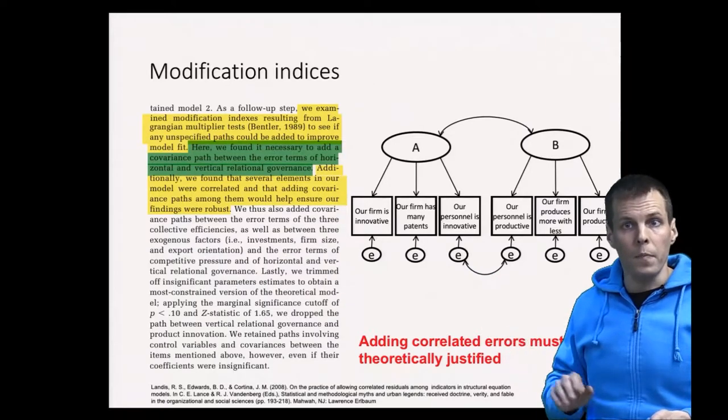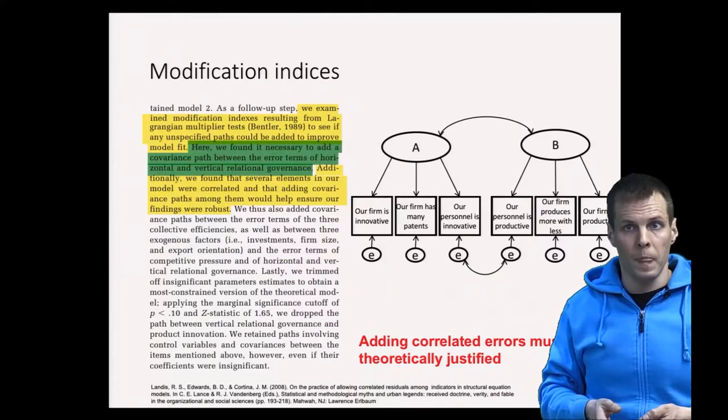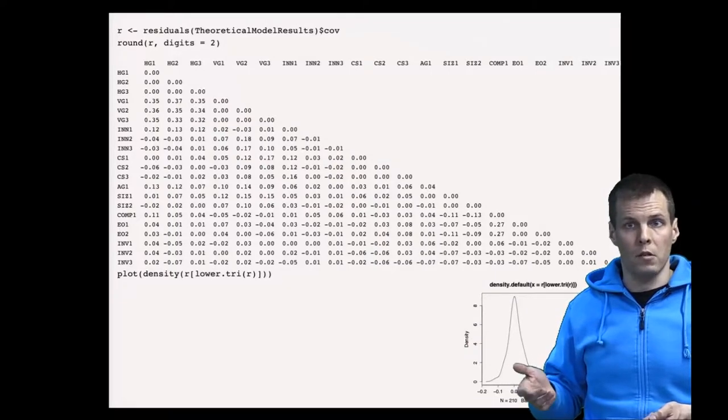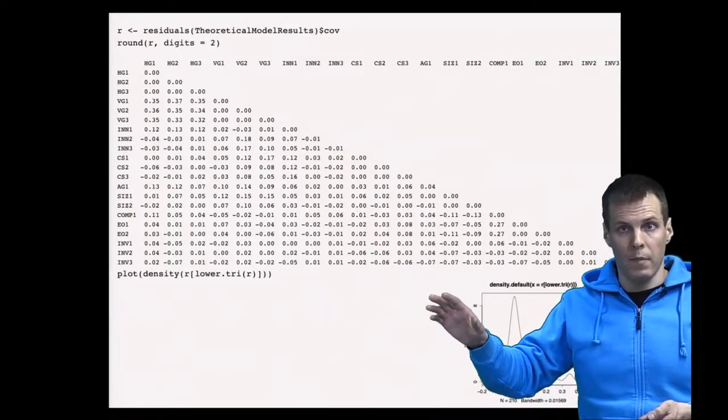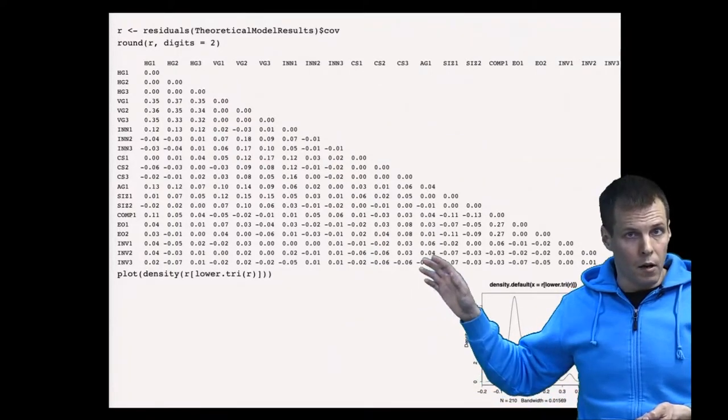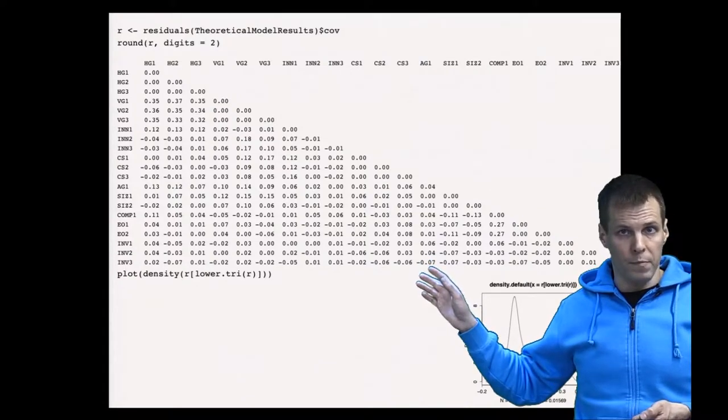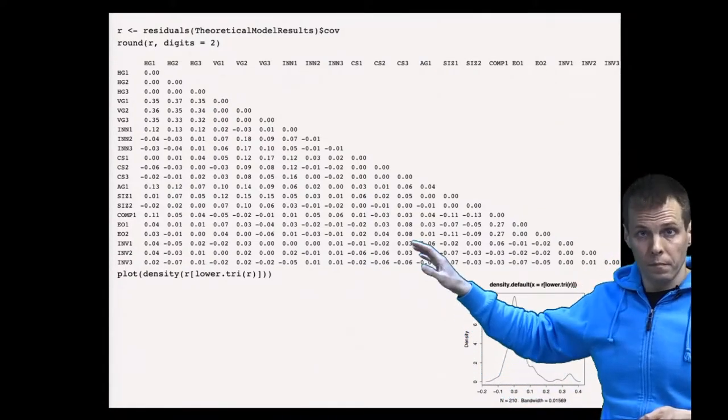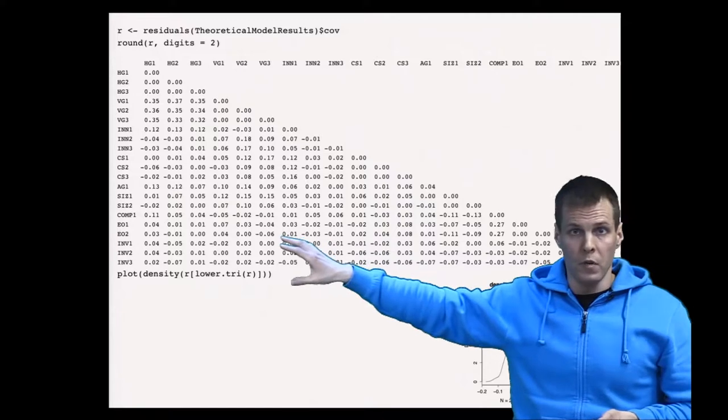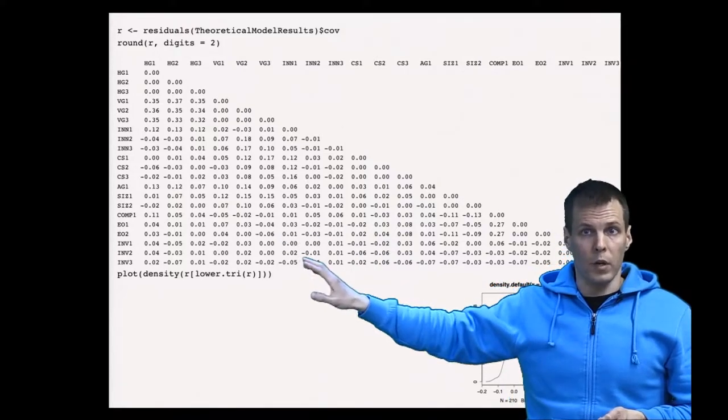Another way of doing this is looking at the residuals. We have the residual correlations, which is the difference between the implied matrix and the observed correlation or covariance matrix. Here are the residuals for the full model, and there are two things that we need to check.